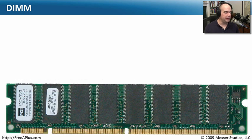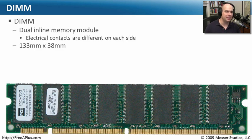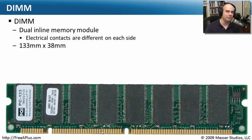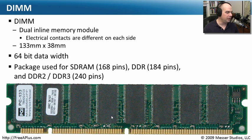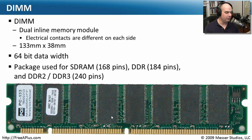Most memory modules these days fit into a format called a DIMM. The SIMM was Single Inline Memory Module; the DIMM stands for Dual Inline Memory Module, which means the contacts on one side connect to completely different pieces of memory than the contacts on the other side. This has a 64-bit data width, designed for our latest generation of processors that can transfer 64 bits in and out of the CPU at one time. The DIMM is the format used for SDRAM, DDR, DDR2, and DDR3.